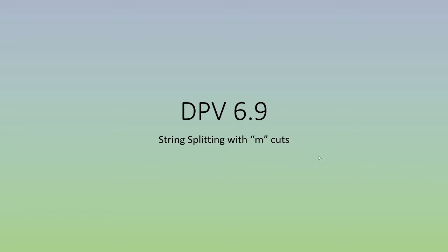Welcome to another session on dynamic programming. Today's topic is splitting a string with m cuts and finding the optimal cost. It's problem DPV 6.9, so let's look at the overview.